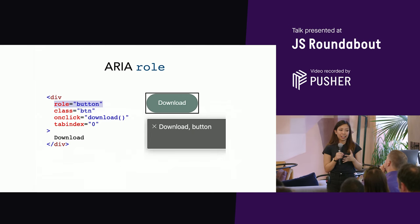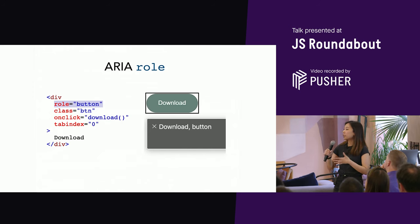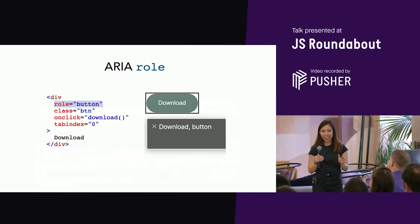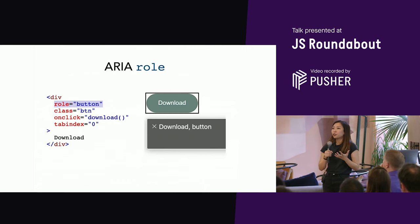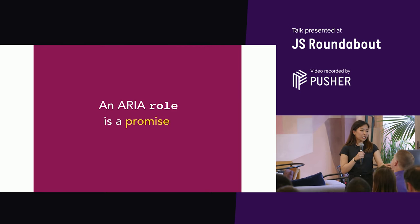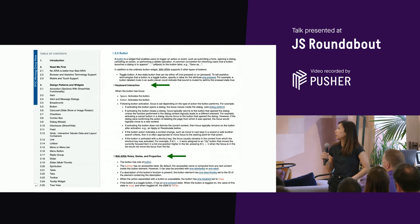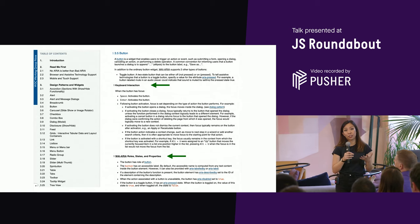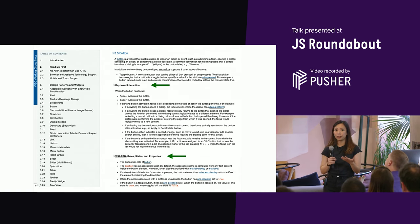An ARIA role defines what an element is supposed to be to a screen reader. Going back to the fake button example — if you put a role of button on a div, the screen reader will read 'download button.' But that's all it does; you still have to provide all the focus and keyboard interactions yourself. There's an ARIA Authoring Practices Guide that tells you everything you need to know about an element. It has many examples of widgets you can reference, so don't reinvent the wheel.